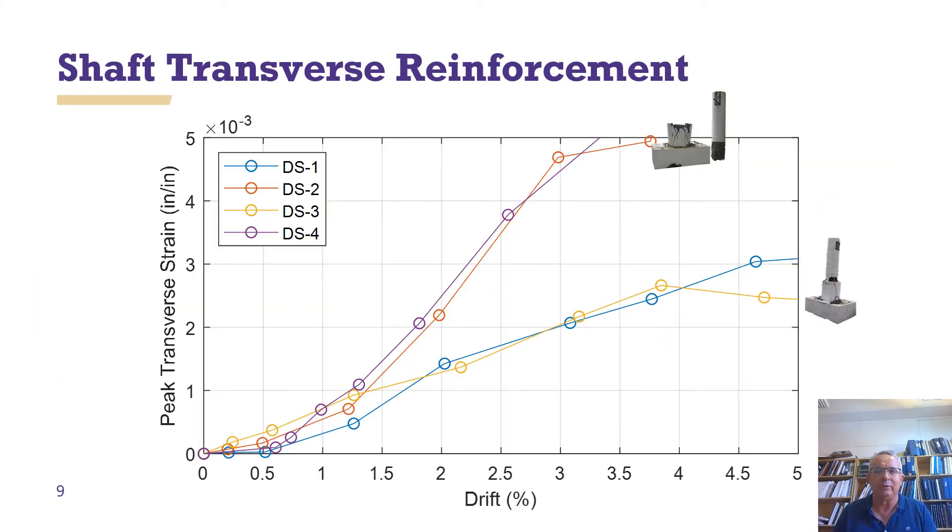If you go even more in detail, you can now look at the strains inside that transverse reinforcement. DS1 and DS3 are the blue and yellow lines. They're on the bottom. They basically tell you as you go from left to right, you're increasing the amount of deformation in the column. And the strains are increasing, but kind of at a reasonable amount. The two top curves, the red and purple, are DS2 and DS4. And you can see what's happening is that because you have less transverse reinforcement, the strains in the reinforcement in the shaft increase much faster, about double, because you have less transverse reinforcement, so it's working harder to try to keep things together.